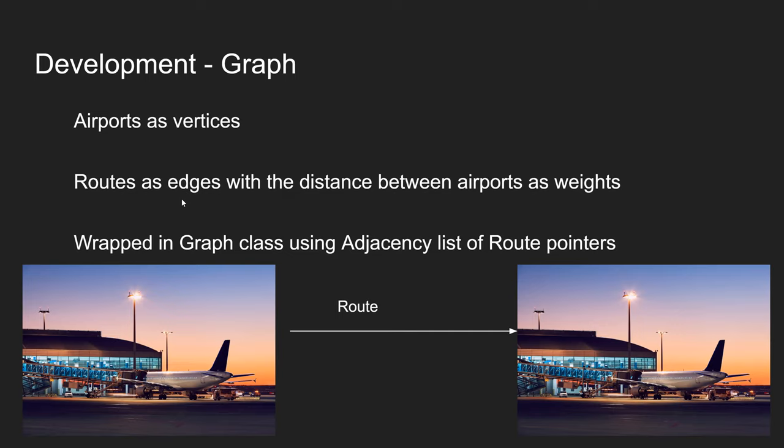We began by creating classes to hold the objects for airports and routes. The airport object contains all the needed information about the airport, such as the name, the city, and the ID. The route object is composed of the source airport and the destination airports, which are airport objects.